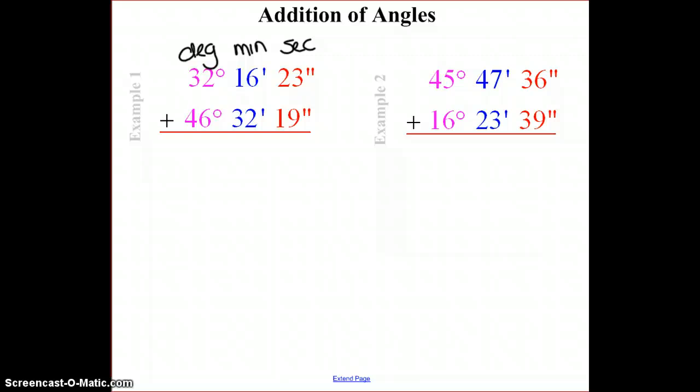So the first thing we want to do is add seconds with seconds. So 23 plus 19 is 42 seconds. Our minutes, 16 plus 32, is 48 minutes. And then lastly, we have 32 degrees and 46 degrees is 78 degrees. So our angle is 78 degrees, 48 minutes, and 42 seconds.